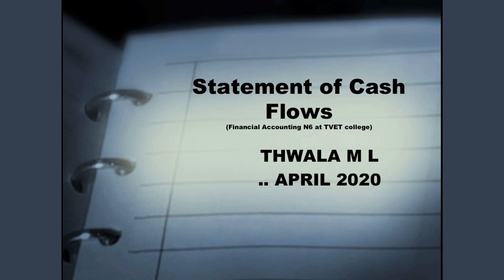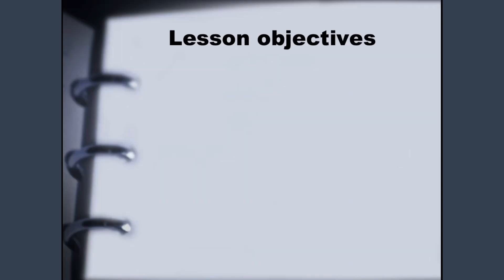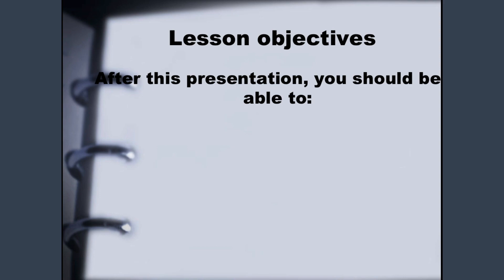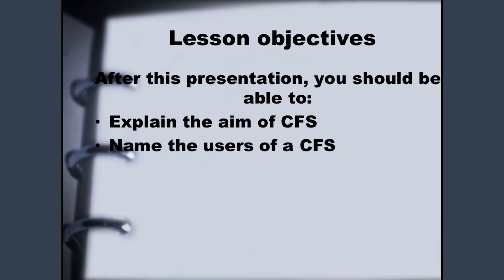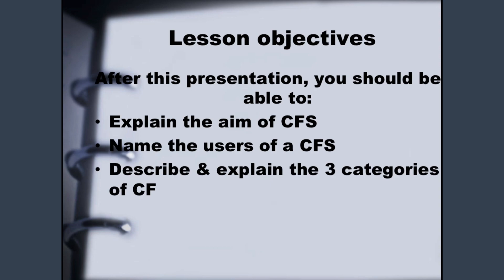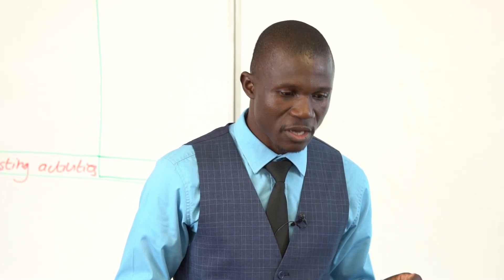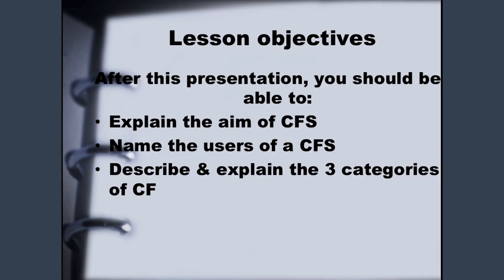The lesson objectives. After this presentation you should be able to: explain the aim of the cash flow statement; name the users of the cash flow statement; describe and explain the three categories of the cash flow statement — and remember, we are not going to present everything, but focus on a certain section within the three categories; explain the non-cash flow items; and compile a cash flow statement.